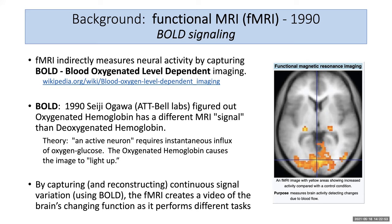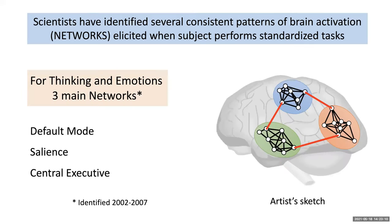By capturing and then reconstructing the continuous signal variation of the brain, the fMRI essentially creates a video of the brain's changing function as it performs different tasks. Scientists have identified several consistent patterns of brain activation, which they've labeled networks, elicited when a subject performs standardized tasks. For thinking and emotions, there are three main networks: the default mode network, the salience network, and the central executive network — all discovered within the past 20 years.